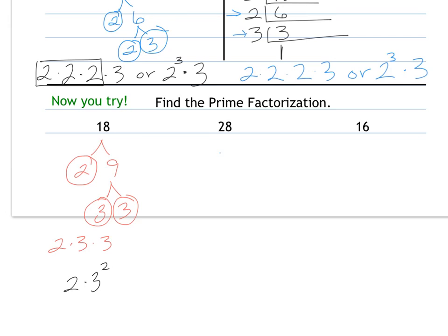For 28, I'm going to do division of primes. The smallest prime is 2, and that goes in there 14 times. 2 goes in there again for 7. 7's prime, so I end up with 1. My factors here are 2×2×7, or 2²×7.